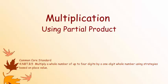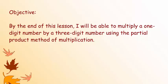Multiplication using partial product. This is a Common Core standard: multiply a whole number of up to four digits by a one-digit whole number using strategies based on place value. The objective: by the end of this lesson, I will be able to multiply a one-digit number by a three-digit number using the partial product method of multiplication.